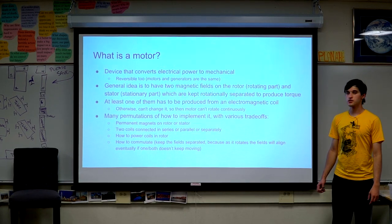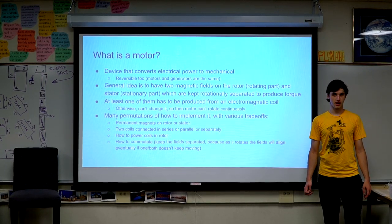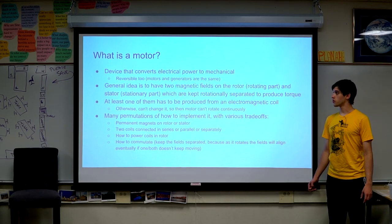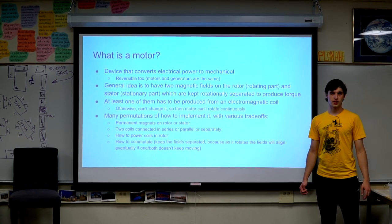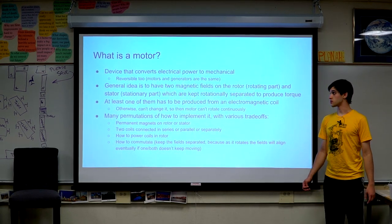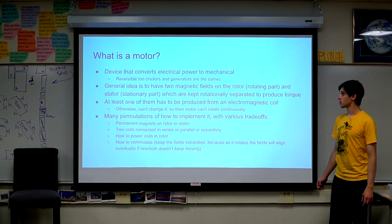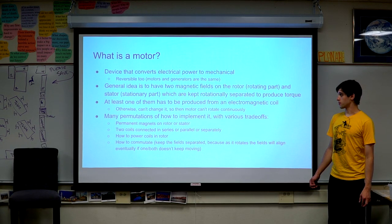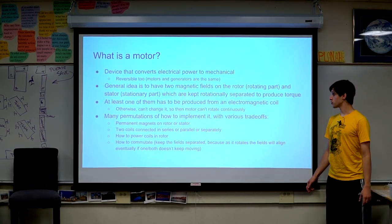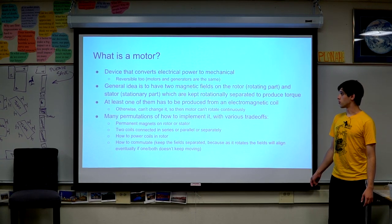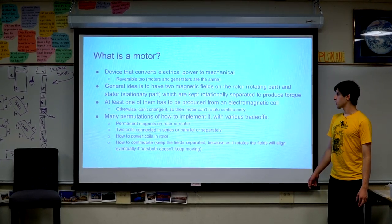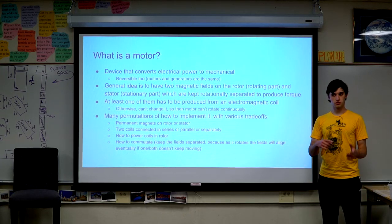So, what is a motor? Basically a motor is a thing that converts electrical power to mechanical power. Because most physics things are reversible — except for time — a motor and a generator are the same thing. What distinguishes a motor from a solenoid is that a motor is typically designed to move continuously. You have two magnetic fields, and if they aren't lined up you get a force trying to line them up. In a motor you do that rotationally — the rotating part is the rotor and the stationary part is the stator.